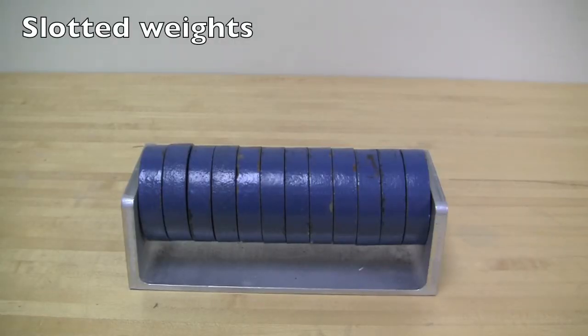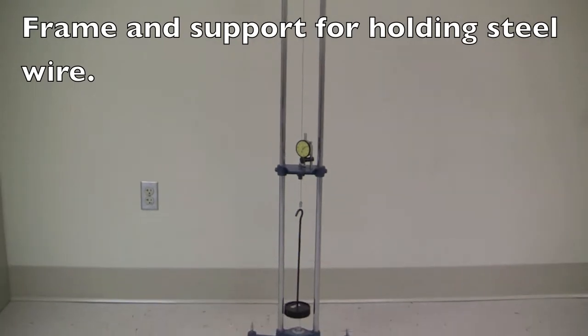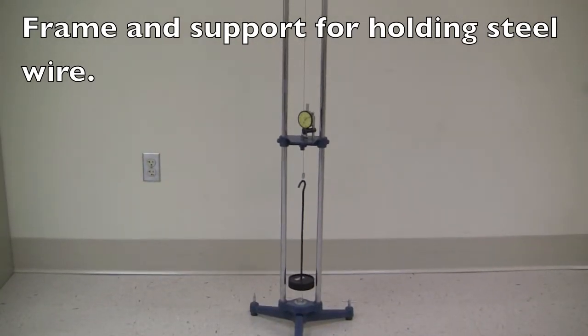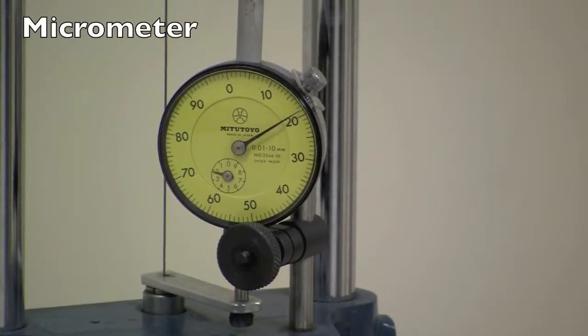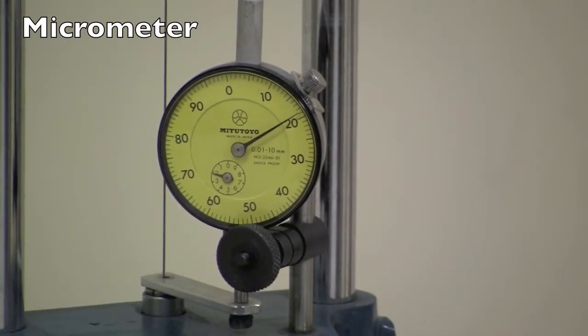You will be using 1 kg slotted weights, frame and support stand for holding the steel wire, and a micrometer to measure the elongation of the wire. Each division of the micrometer is equal to 0.01 millimeter.